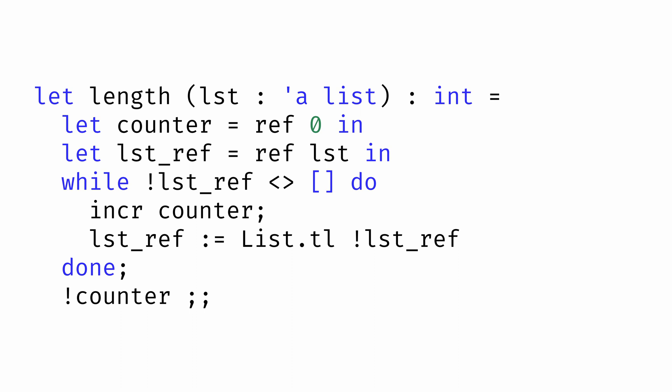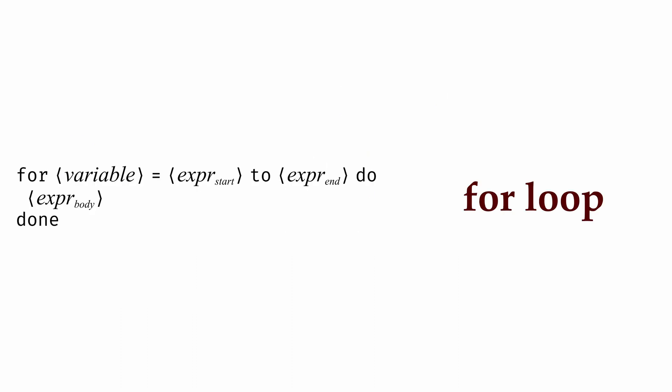In addition to while loops, OCaml also has for loops that can count from some starting value to some ending value. A for loop lets us assign a variable to the value of some initial expression, and count up to some ending expression. Inside the for loop is some body expression that can make reference to that variable.